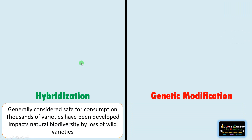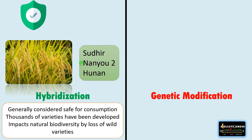Regarding safety: crops developed by hybridization are considered safe for consumption, as we have hundreds of thousands of varieties available and have been using them since time immemorial. For example, hundreds of rice varieties are released every year, like Sudhir, Nanu 2, and Hunan — all varieties with desirable traits. However, development of these hybrids can impact natural biodiversity through loss of wild varieties.